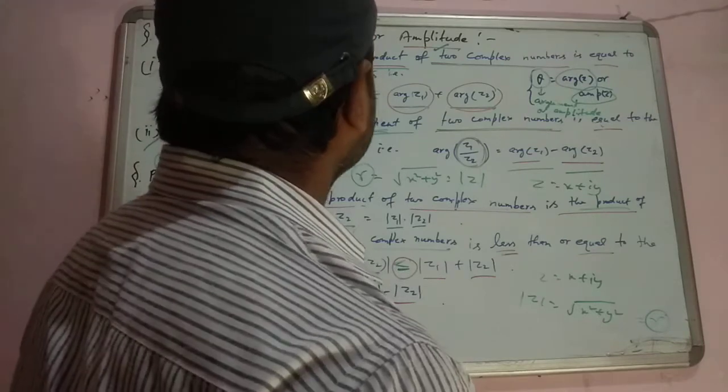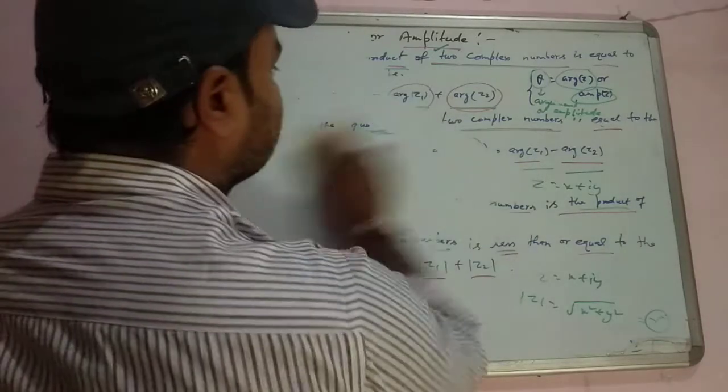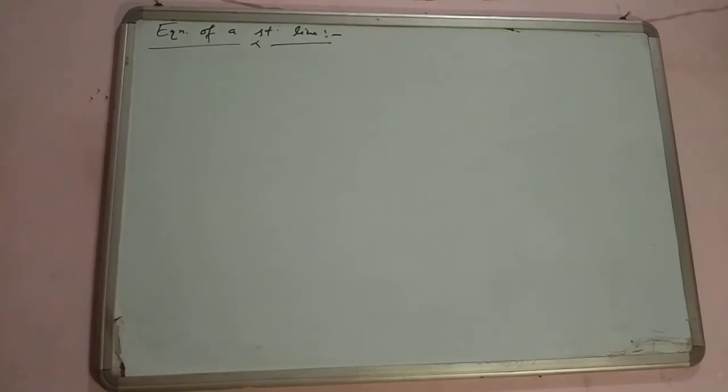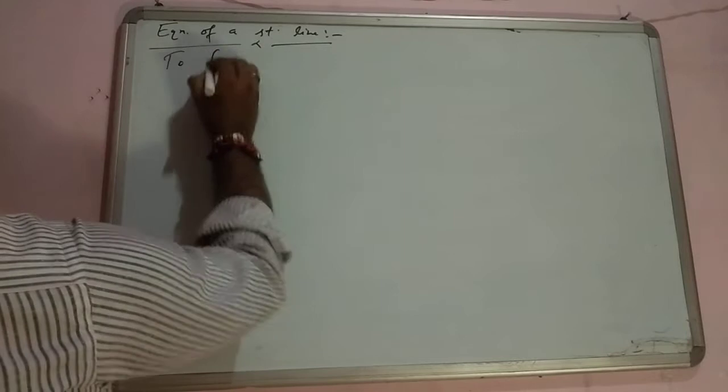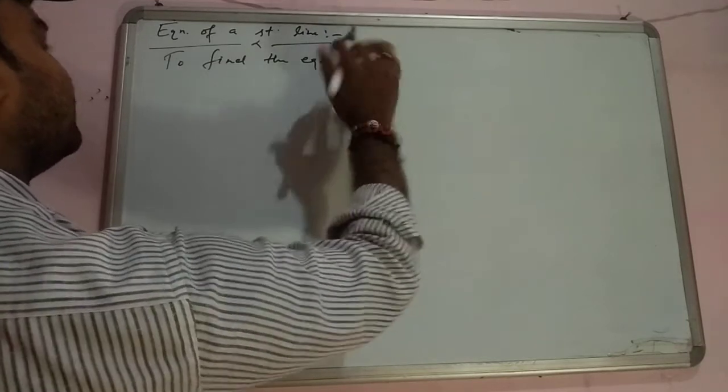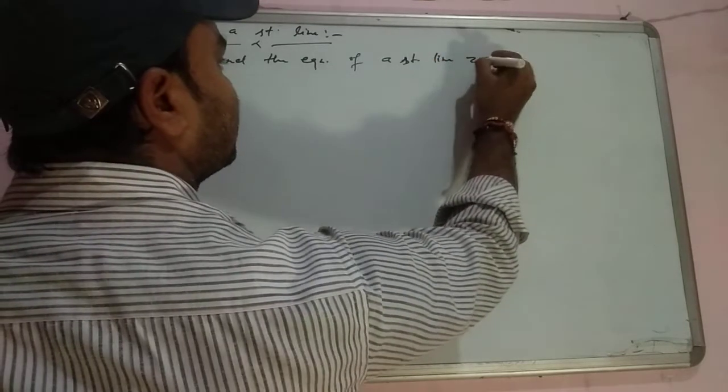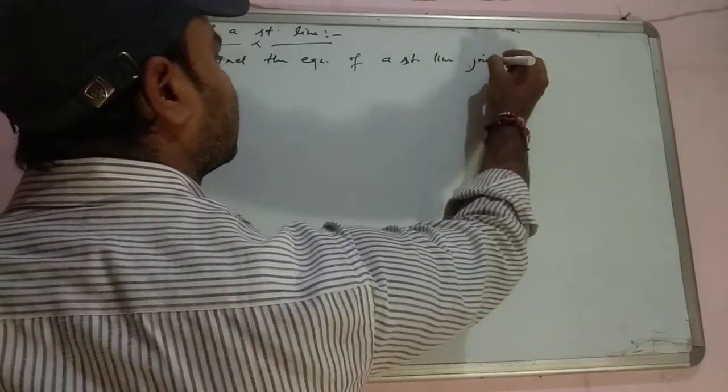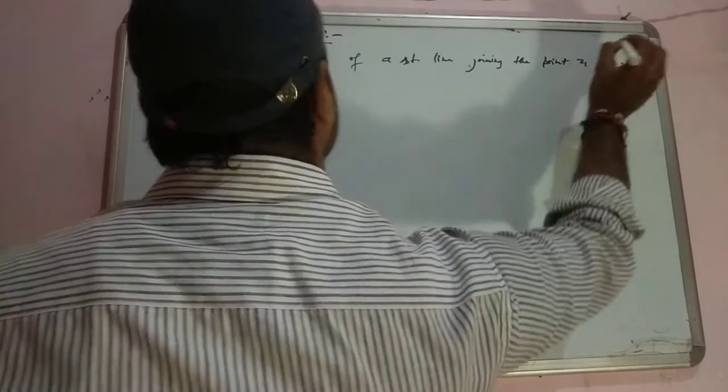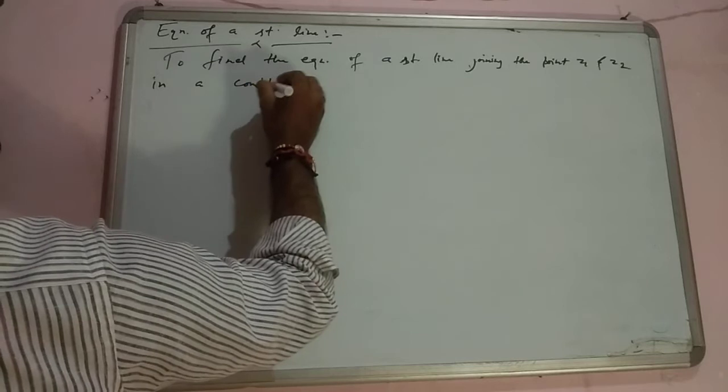Now I will discuss the equation of a straight line. To find the equation of a straight line joining the points z1 and z2 in a complex plane.